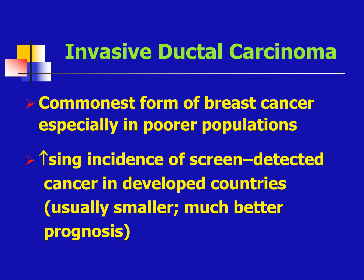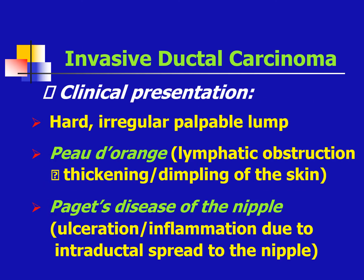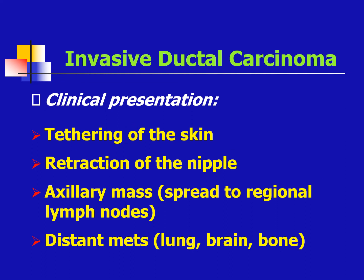Invasive ductal carcinoma is the most common form of breast cancer, especially in poor populations, with increasing incidence of screen-detected cancer in developed countries. Generally, the smaller the mass, the better the prognosis. The clinical presentation of invasive ductal carcinoma would be a hard, irregular palpable lump. Peau d'orange is due to lymphatic obstruction, which results in thickening and dimpling of the skin. Paget's disease of the nipple is ulceration or inflammation due to intraductal spread to the nipple. Clinical presentation also includes skin tethering, nipple retraction, and an axillary mass spreading to regional lymph nodes. It could metastasize to the lung, brain, and bone.